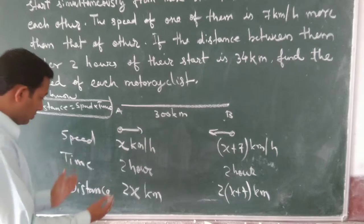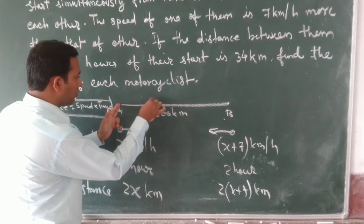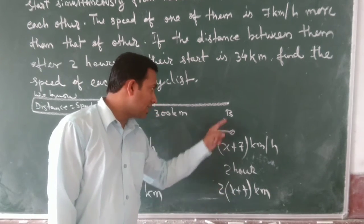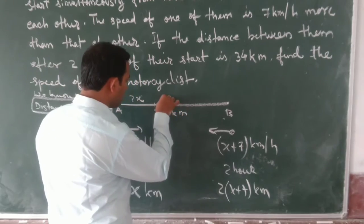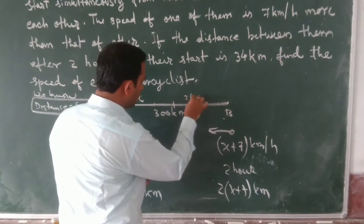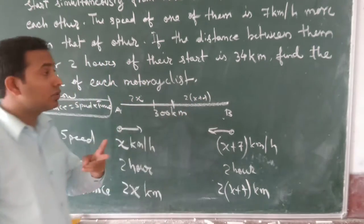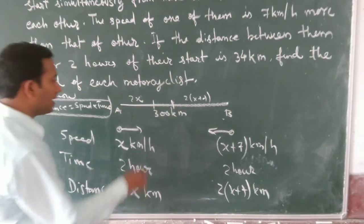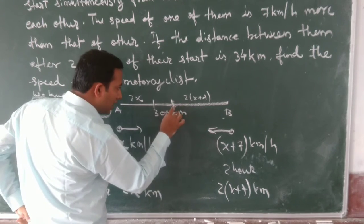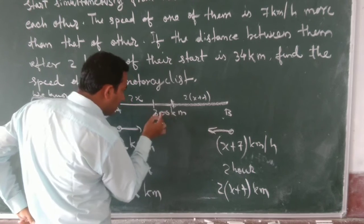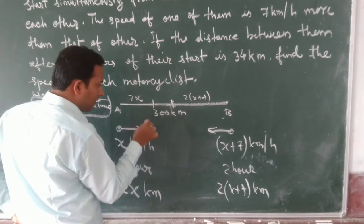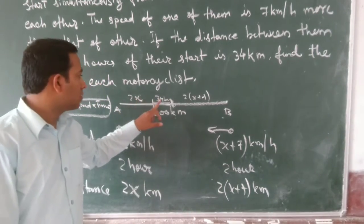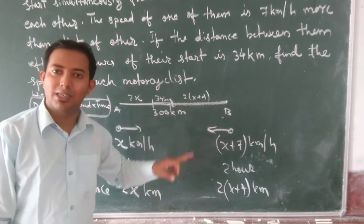The distance covered by A after 2 hours is 2x, and the distance covered by motorcyclist B after 2 hours is 2(x plus 7). The distance remaining between them after 2 hours is 34 kilometers.